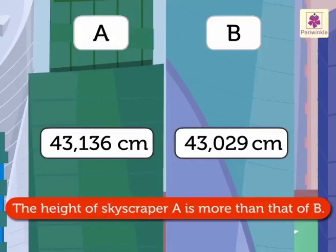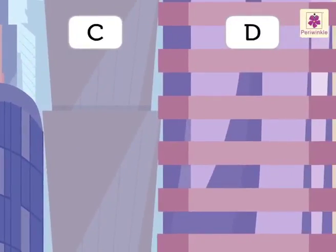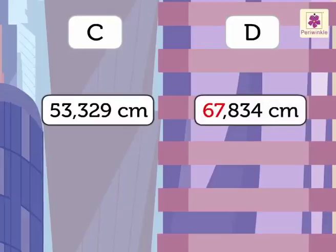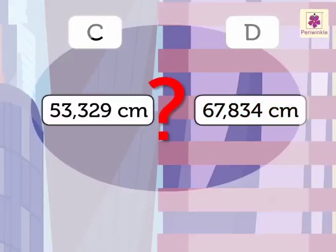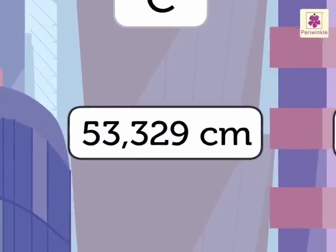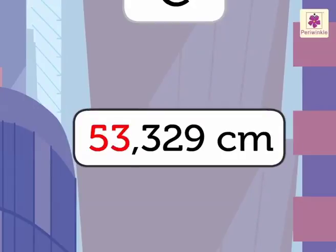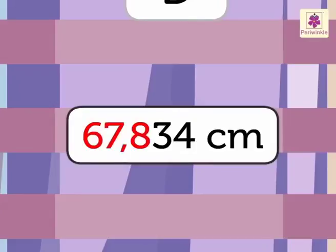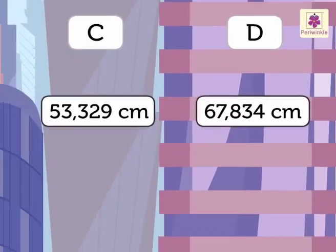Now, let us compare the heights of skyscraper C and D. The height of skyscraper C is 53,329 cm and the height of skyscraper D is 67,834 cm. Which one is taller? Look at the numbers 53,329 and 67,834 on the skyscrapers.